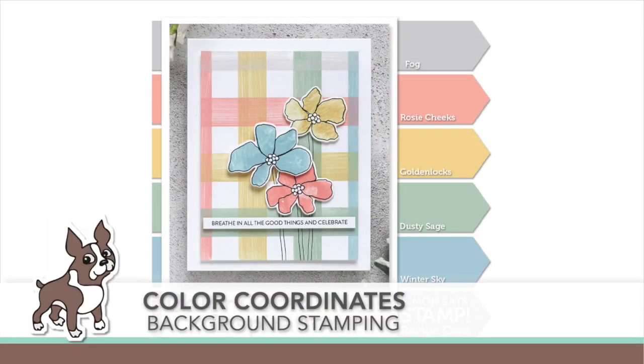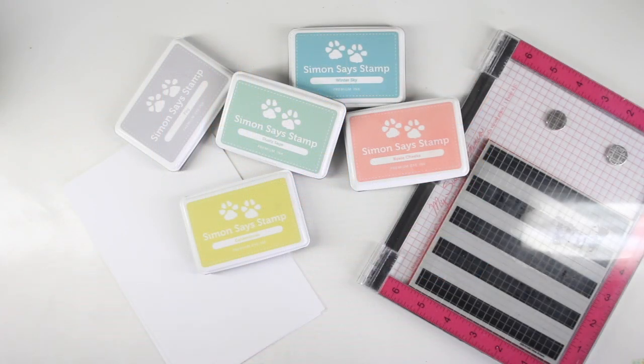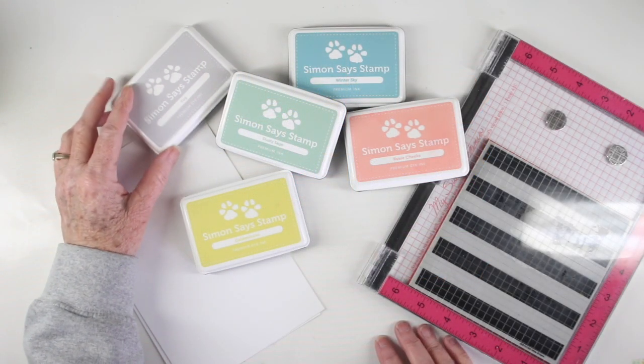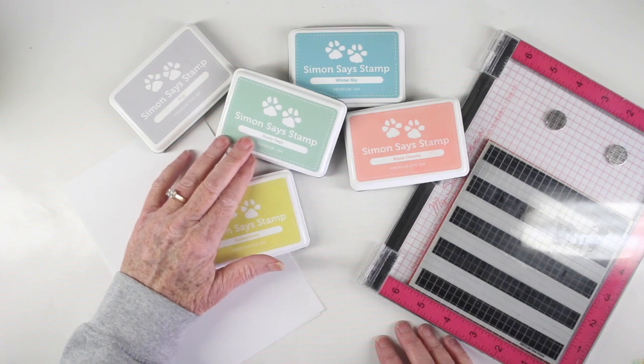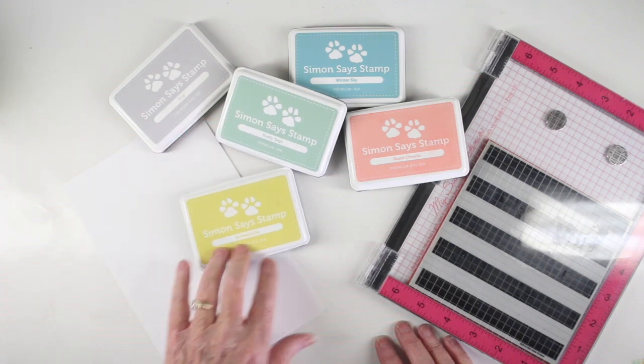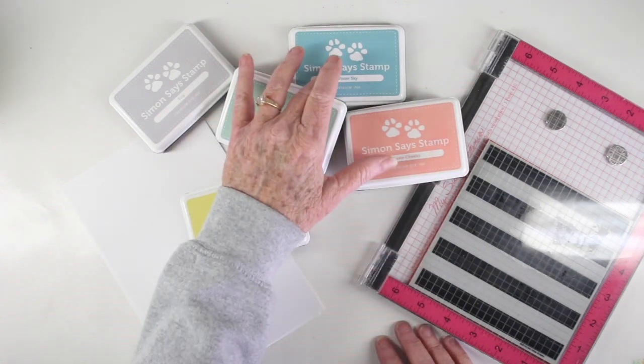Welcome everyone, it's Sherri Carroll for SimonSaysStamp.com and I have a color coordinates for you that is perfect for spring. I'll be using five colors: fog, dusty sage, golden locks, rosy cheeks, and winter sky.